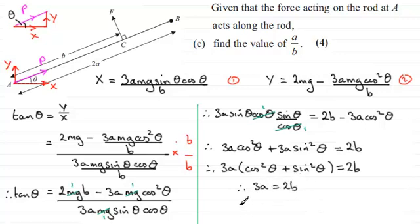And we're nearly there now because if I divide both sides by B and both sides by 3, I get A over B equals 2 over 3. A over B equals 2 thirds.